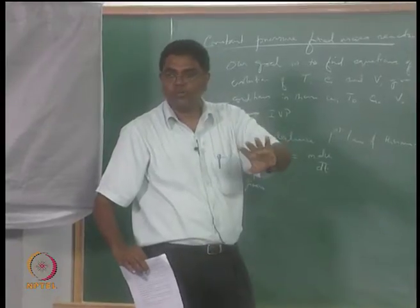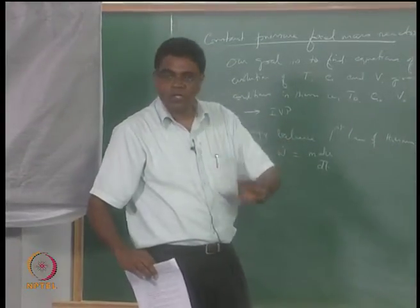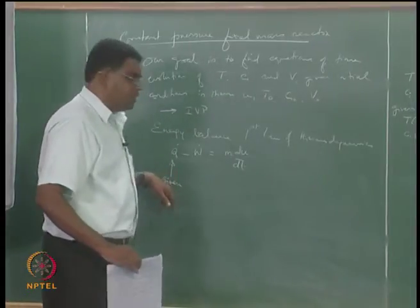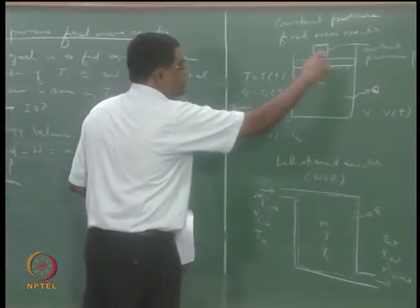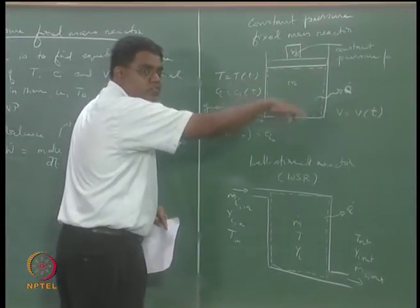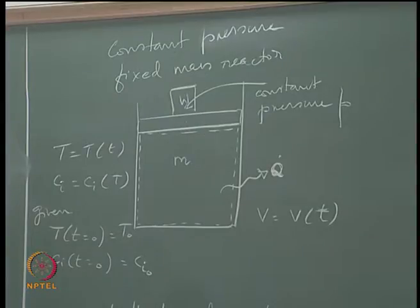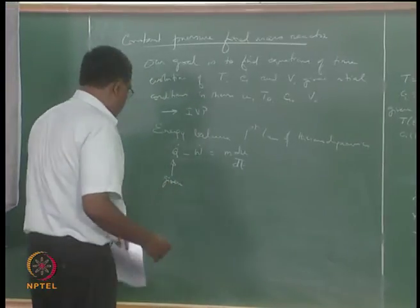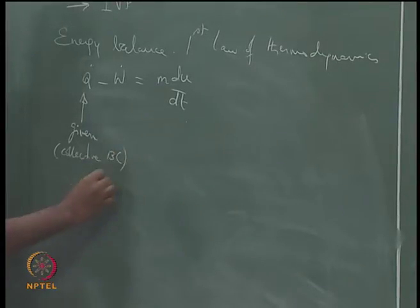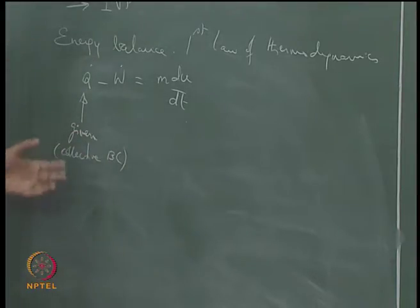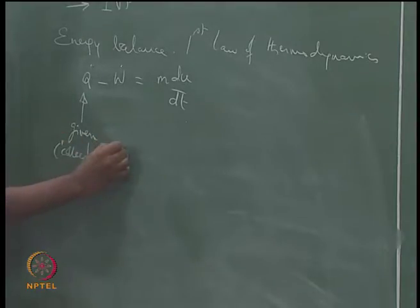We are looking at only temporal variation, so we are looking for ODEs in time. Therefore this is like a collective boundary condition — what is the net heat flux across all the surfaces. This is a given, a collective BC. You do not require individual boundary conditions at each surface; instead you convert that into a given property here.